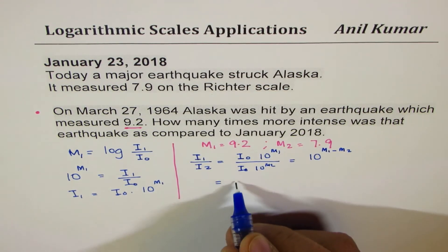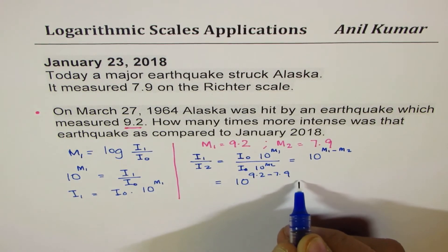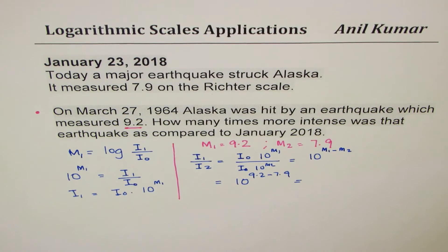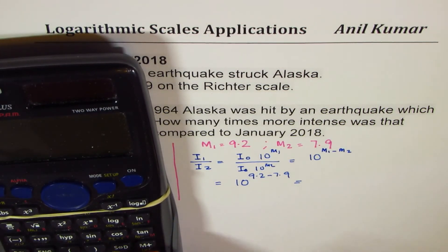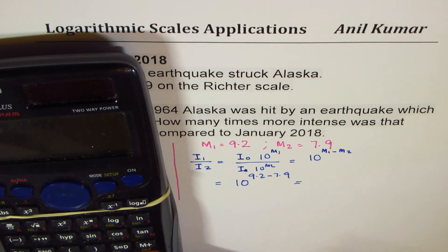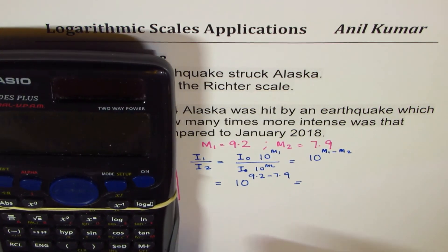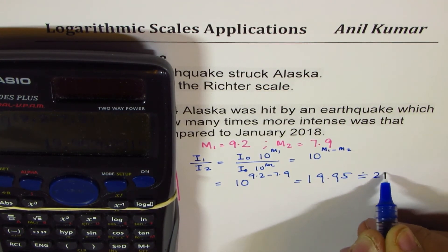So I₁ over I₂ equals I₀ · 10^M₁ divided by I₀ · 10^M₂. The I₀ terms cancel, leaving 10 to the power of M₁ minus M₂. We know these two numbers: it is 10 to the power of 9.2 minus 7.9. Using the calculator: 10^(9.2 − 7.9) equals 19.95, so it is almost 20 times.